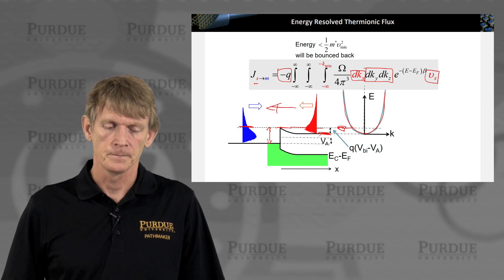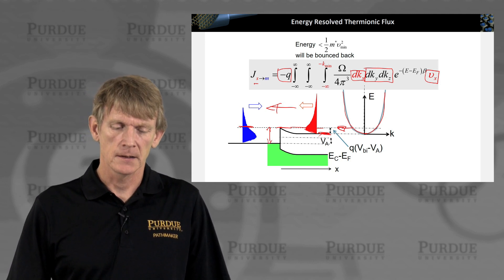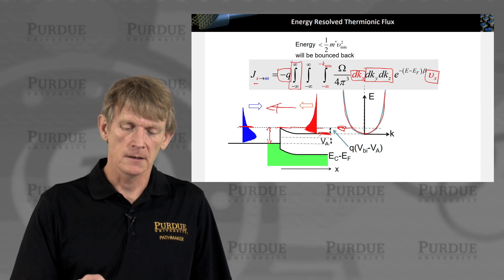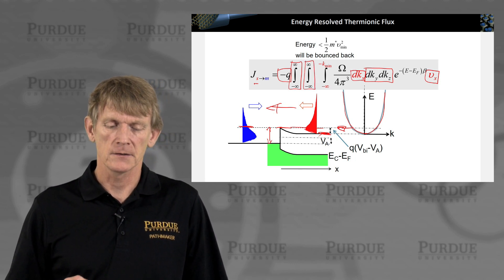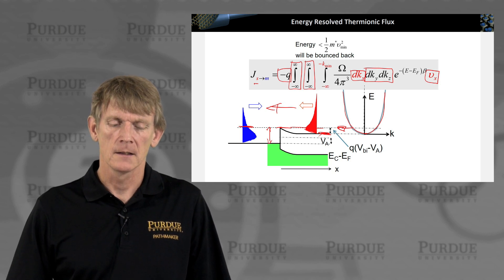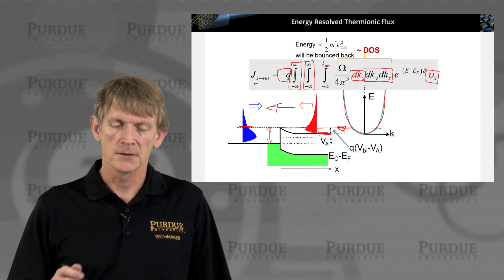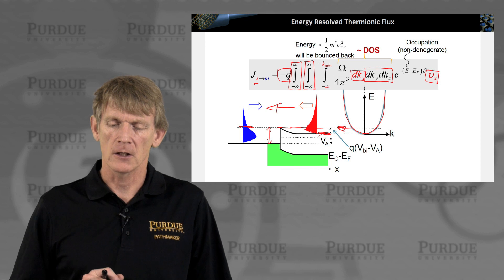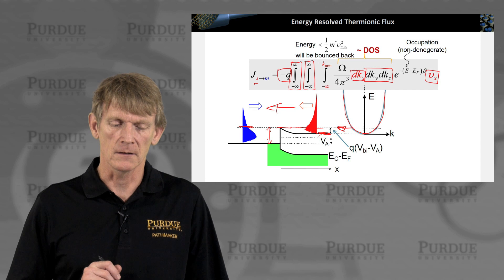We're interested in all of the carriers in the y direction, all of the carriers in the z direction, and in the carriers that have at least a minimum k available. Here's the density of states in the structure as indicated. We're integrating this density of states, and we have the occupation of this density of states as indicated here with E minus E_F.